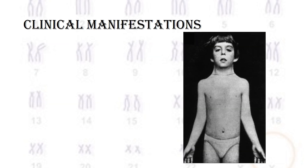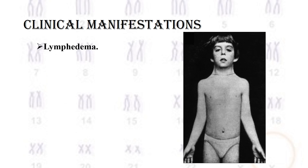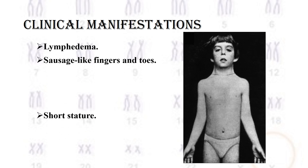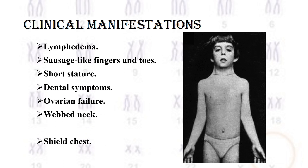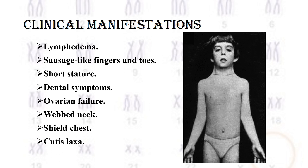The clinical manifestations of Turner syndrome include lymphedema, sausage-like fingers and toes, short stature, dental symptoms, ovarian failure, webbed neck, shield chest, and cutis laxa.